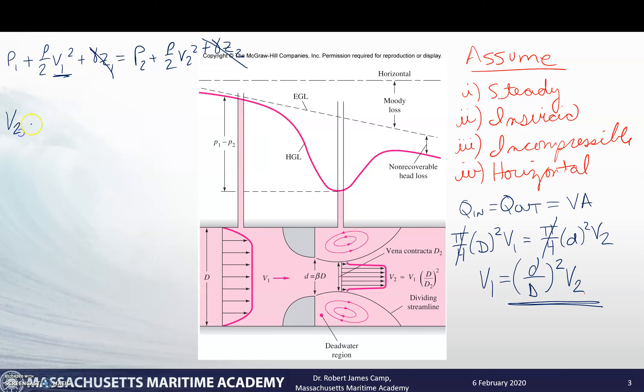If you churn through all of the algebra for that, what you're going to end up with is that v2 equals [2(P1 - P2) / (ρ(1 - (d/D)⁴))]^(1/2). So now we have a term for v2 that's completely in terms of things that we can easily measure - the pressure drop, the geometry, and the density of the fluid. We'll have to remember though that v2 is also equal to Q divided by A2.